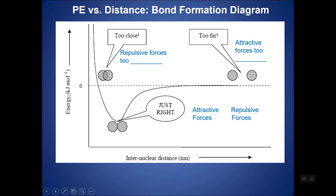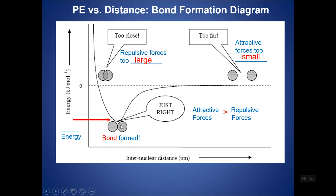As you start moving two atoms together, a bond can begin to form. But if you move them too close, there will be too much repulsive force between the positive nuclei and negative electrons. If we get the distance just right, the bond forms at the point where attractive forces between nuclei and electrons outweigh the repulsive forces. The bond is formed at the lowest energy point along this graph.